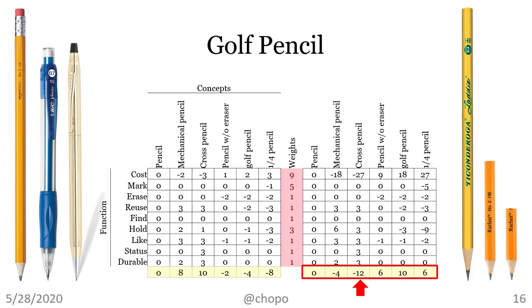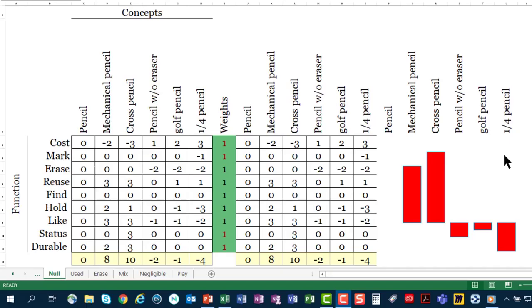The gold cross pencil is the worst with the score of negative 12. The best is the golf pencil with the score of positive 10. The cost advantage of the quarter pencil is not sufficient because it's hard to hold. The pencil without eraser comes behind. Now, the golf pencil is the best choice. How come? How can you say that the golf pencil is better than the gold plated cross pencil? Well, it's better for the purpose of cost reduction. It's better for the situation where the weights are leaning towards cost reduction by a lot. The functions like status and like are purposefully neglected.